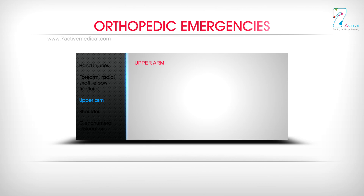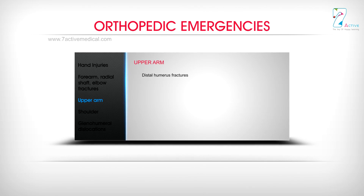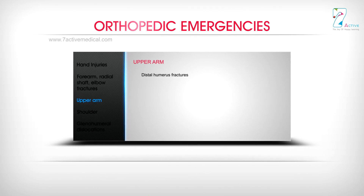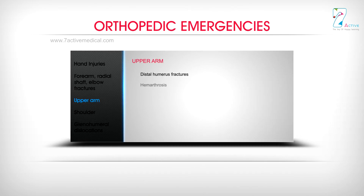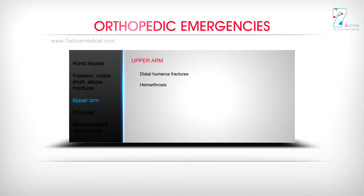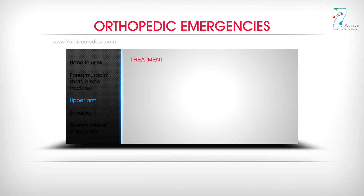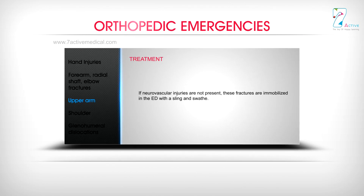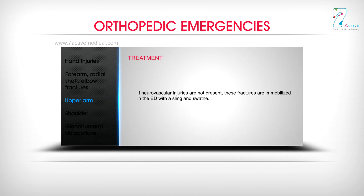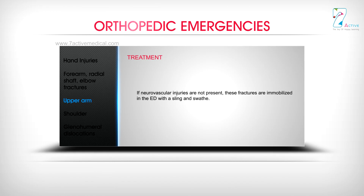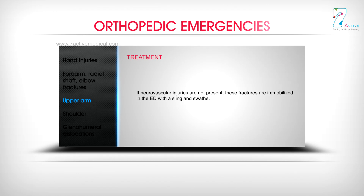Upper arm: Distal humerus fractures may cause haemarthrosis. If neurovascular injuries are not present, these fractures are immobilized in the ED with a sling and swath.